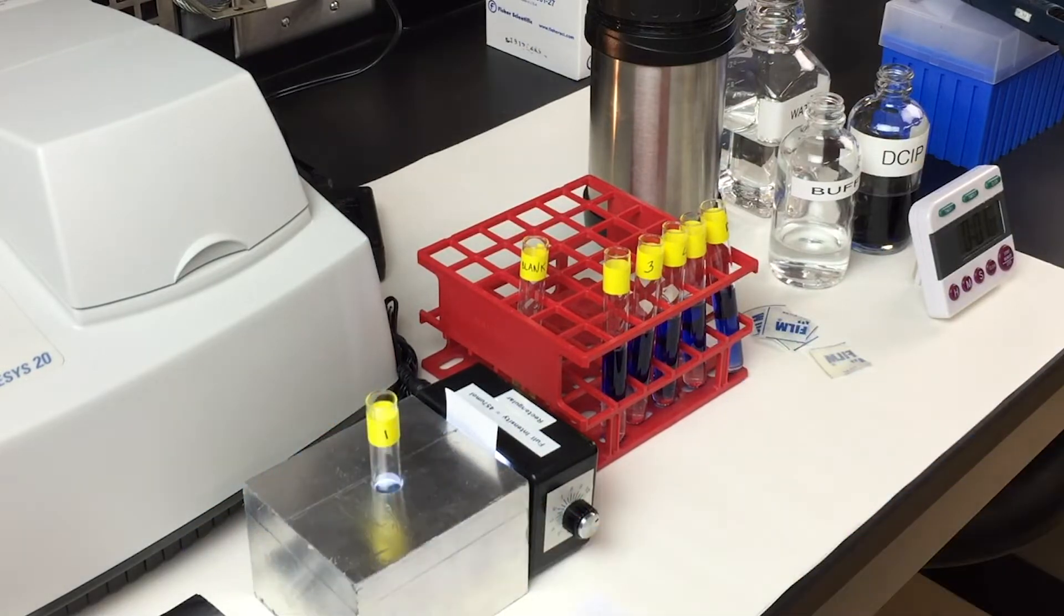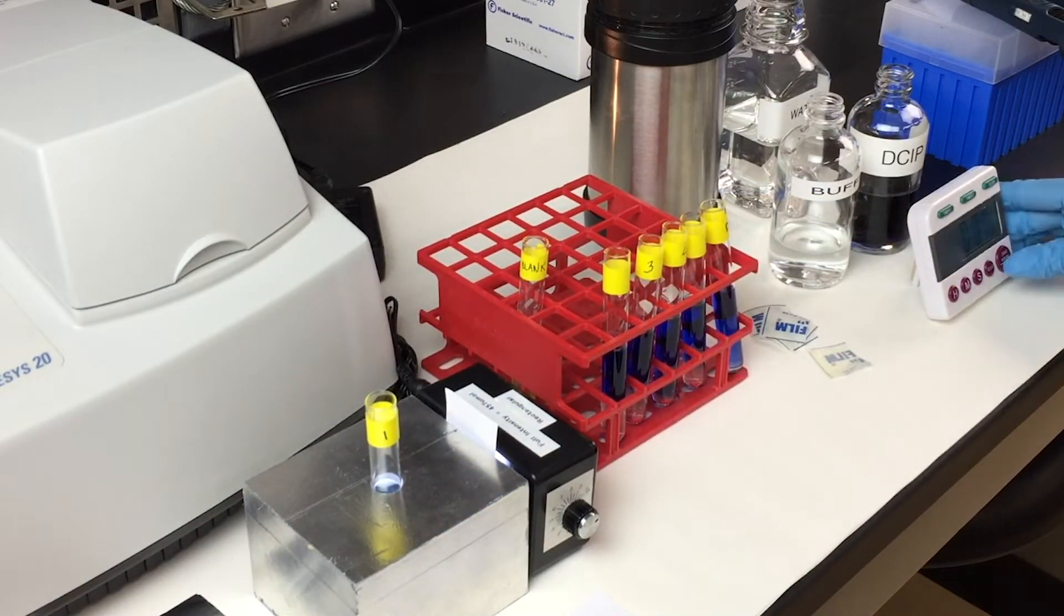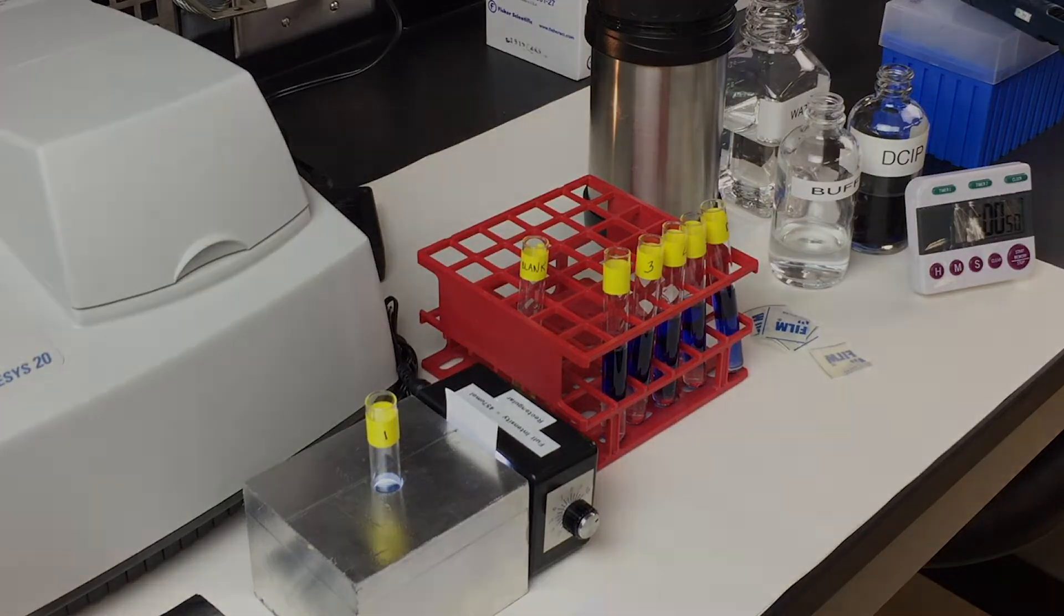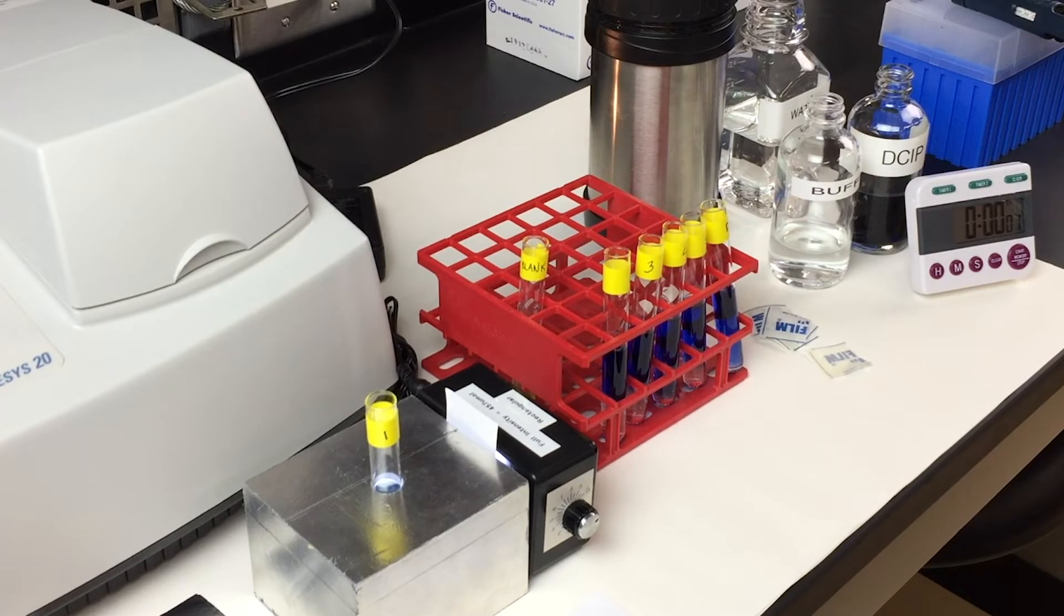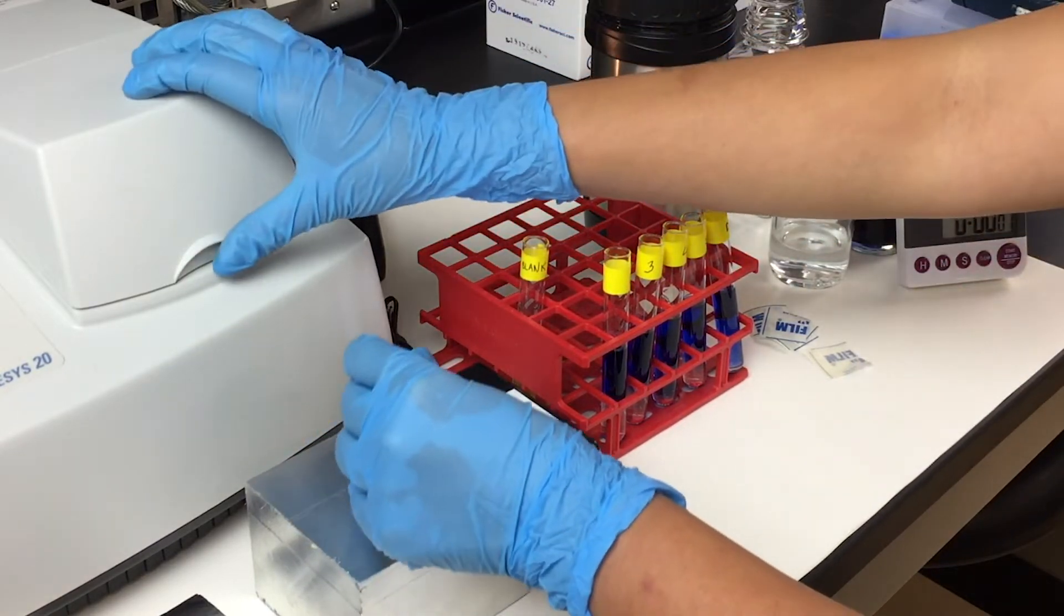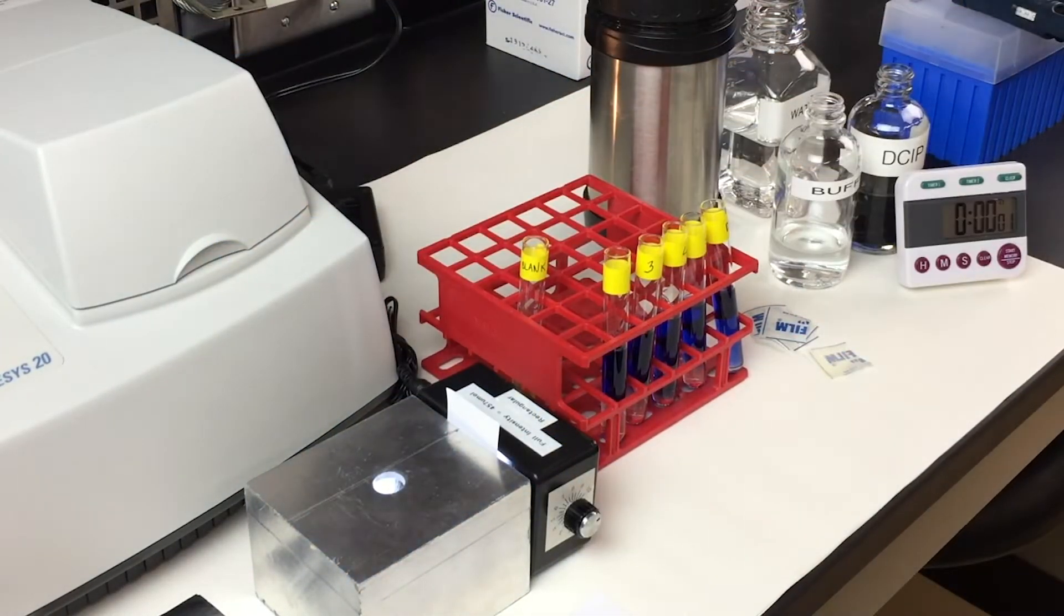Then you illuminate your sample in test tube one with one layer of filter paper with the duration of the predetermined standard illumination time. For this demonstration, that time would be one minute. When the time has elapsed, read your sample in the spectrophotometer again and record that value into your lab manual.